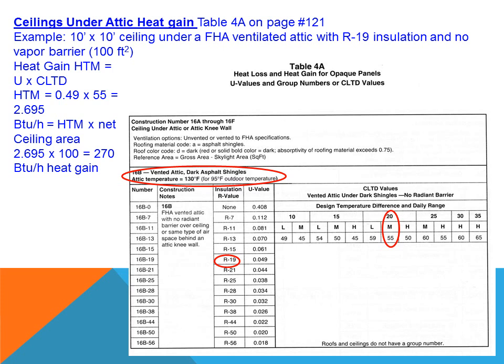Another heat gain we need to consider is the heat picked up through ceilings, because ceilings above an attic can gain a great deal of heat through the larger temperature difference. The attic may be many degrees higher — for example, 130 degrees compared to an outdoor ambient of only 95 degrees. Because of that, we need to look at the ceiling transfer factor based on the type of insulation in the attic. Without insulation in the attic, we will have to size the heating and cooling equipment drastically larger because of that high temperature difference.